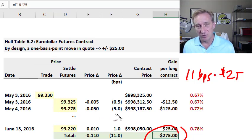That's the interpretation of John Hull's table 6.2. In the next video, I'll show how the Eurodollar futures contract is used to hedge interest rate risk. If you found this video helpful, please subscribe to the channel. Thank you.